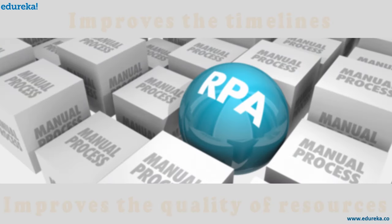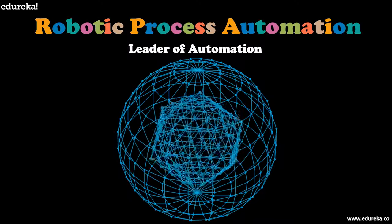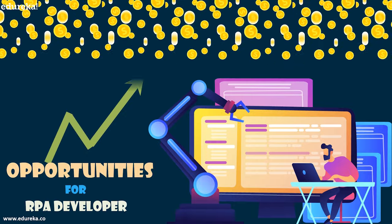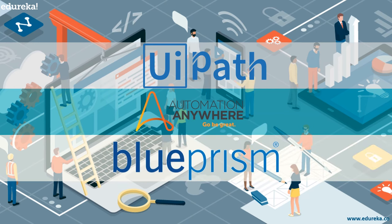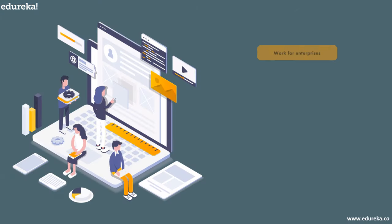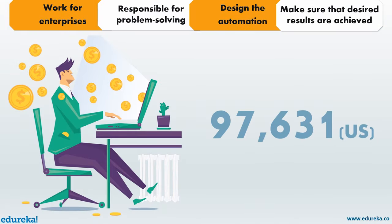Robotic Process Automation not only improves timelines but also improves the quality and productivity of resources. With today's world moving towards automation and RPA being a key leader, this has opened up many opportunities for various roles in the RPA field as an RPA developer. RPA developers are sophisticated developers of automation tasks with hands-on experience in top RPA tools such as UiPath, Automation Anywhere, and Blue Prism. They work for enterprises, are responsible for problem-solving and designing automation, and ensure the designed automation achieves desired results. An RPA developer earns approximately $97,000 US dollars annually.